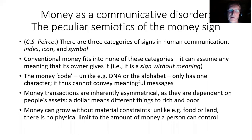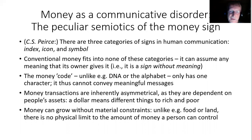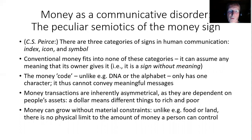There are many strange things about money. Unlike the DNA molecule or the alphabet or other kinds of codes, the money code only has one character. I would argue this is why it cannot convey meaningful messages, which always requires at least two characters to get some kind of binary information. Also, money transactions are always inherently asymmetrical, because they're dependent on how much money people have. A dollar means very different things to a rich person and a poor person. Finally, money can grow without any material constraints — unlike food or land, there's no physical limit to the amount of money a person can control.